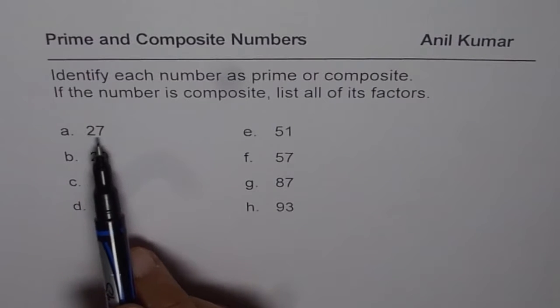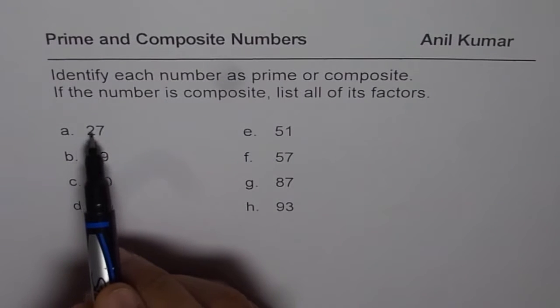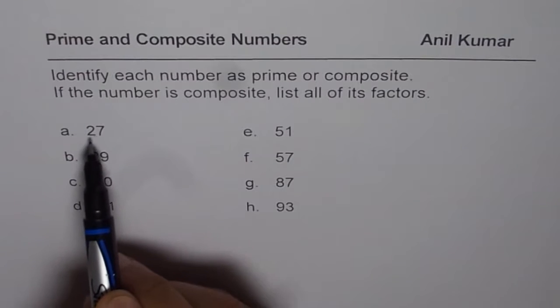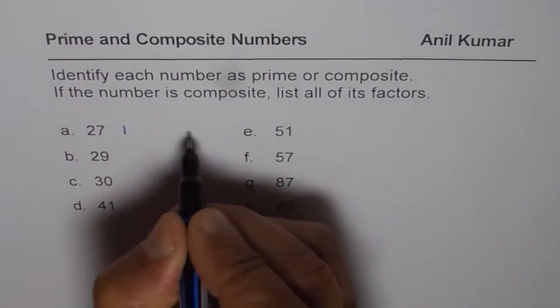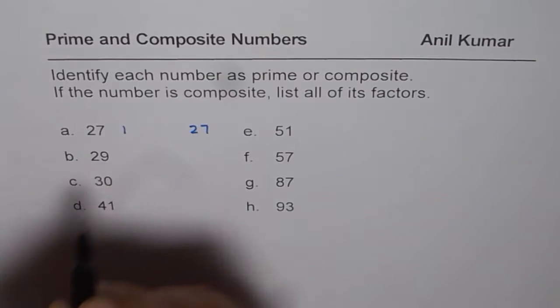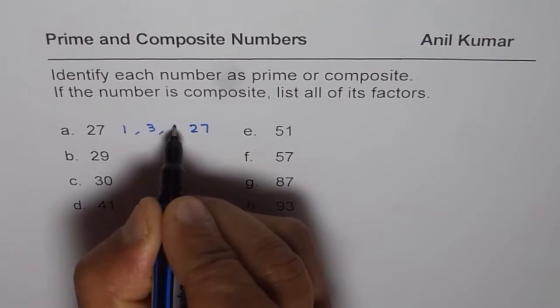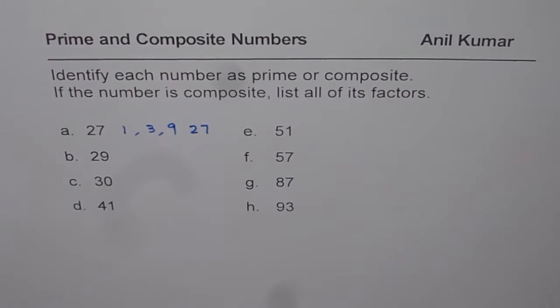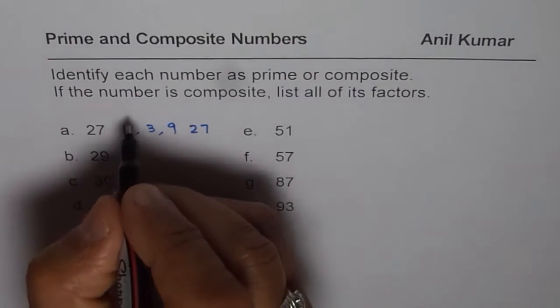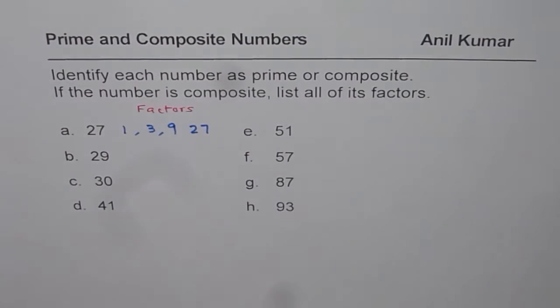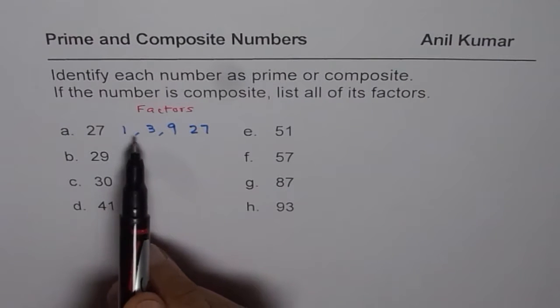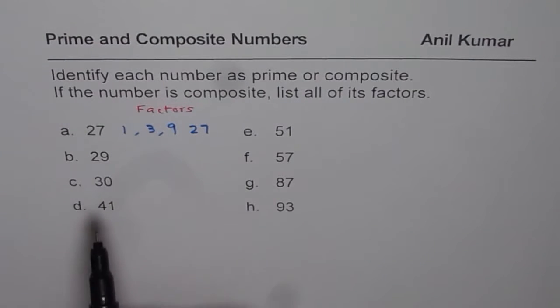So let's begin by 27. 2 plus 7 is 9, so it can be divided by 9. It can also be divided by 3. So we know 27 has more than 2 factors. So 27 could be written as 1 times 27. It could be written as 3 times 9. So these are the factors for 27. And since it has more than 2 factors, it is a composite number.